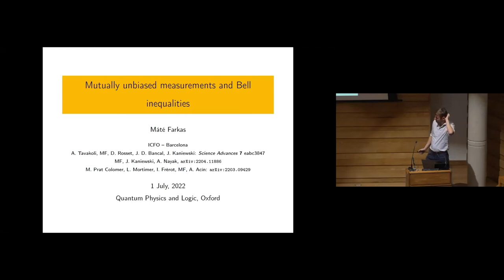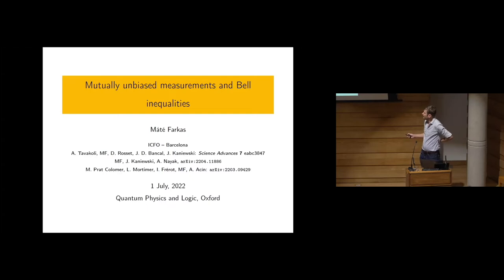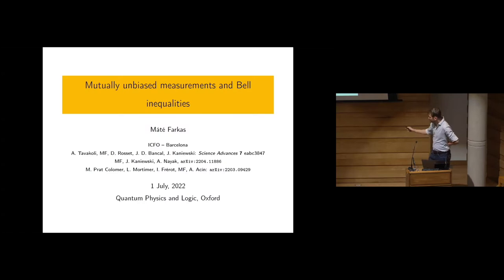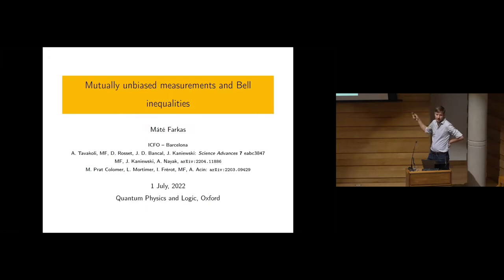I'm going to talk about this work, which you can find in three papers. The first one is mostly about Bell inequalities, the second one is more mathematical — it's about Hadamard matrices of quaternions. The last one is kind of back to Bell inequalities and trying to tackle the MUB problem through Bell inequalities.